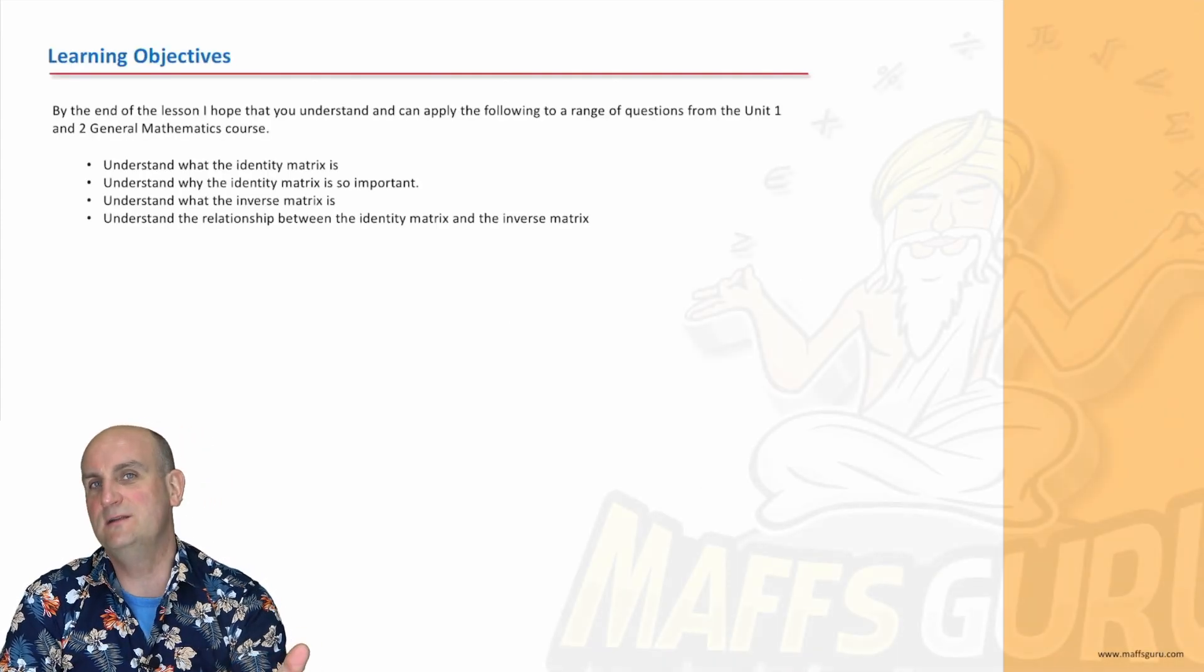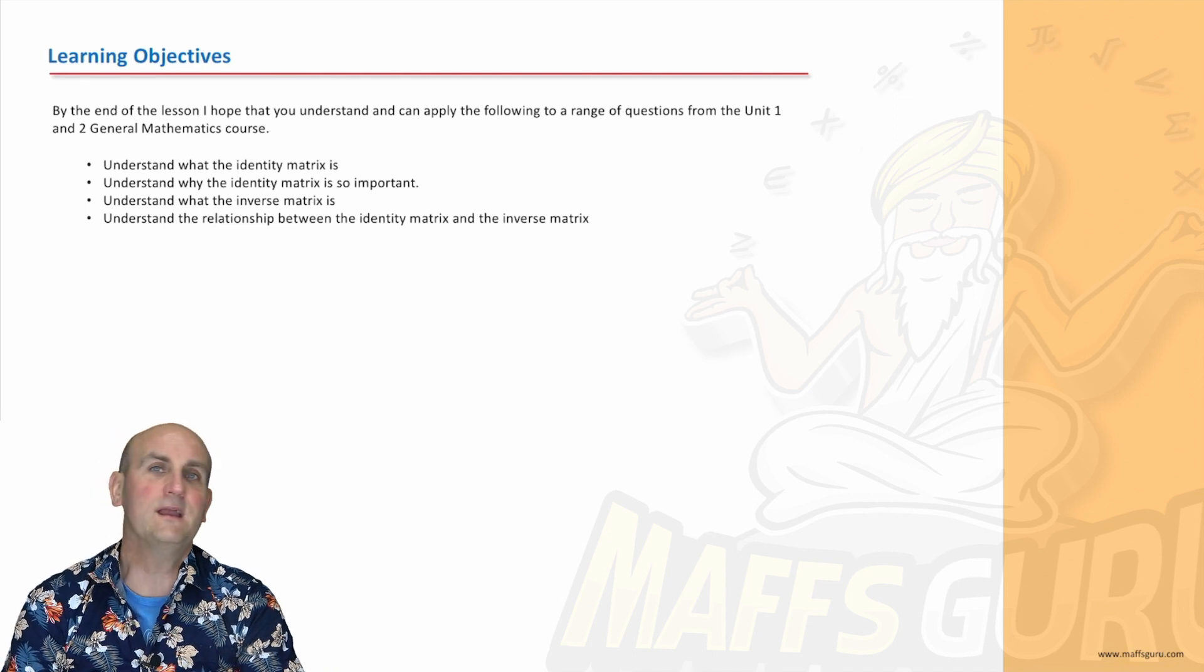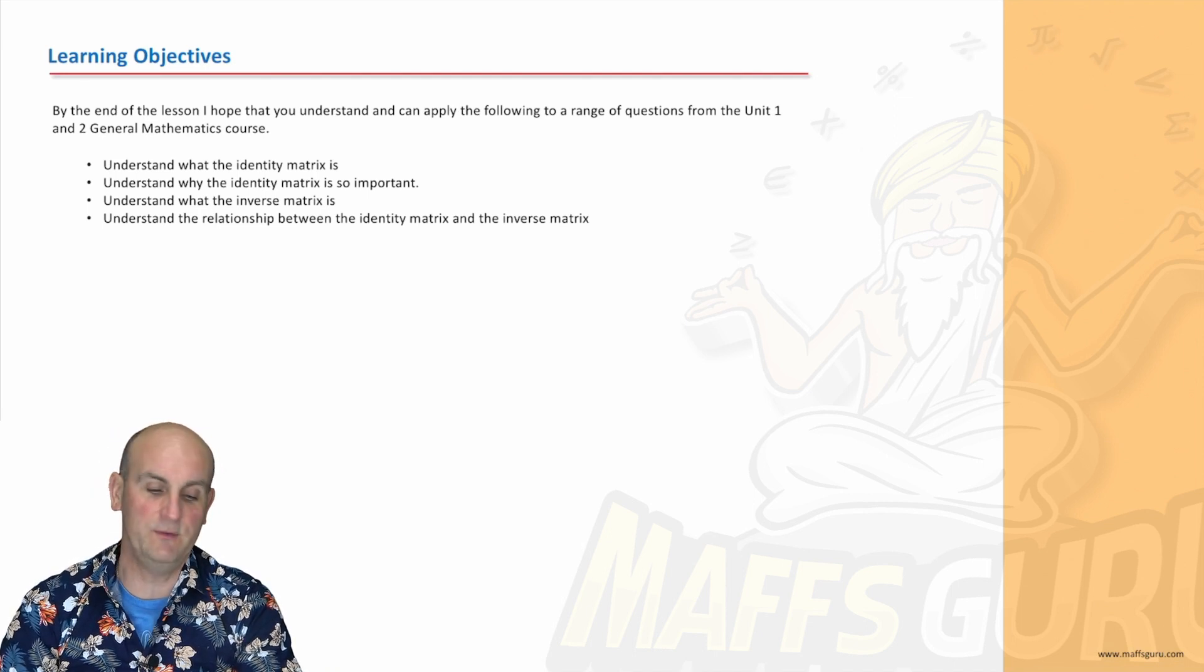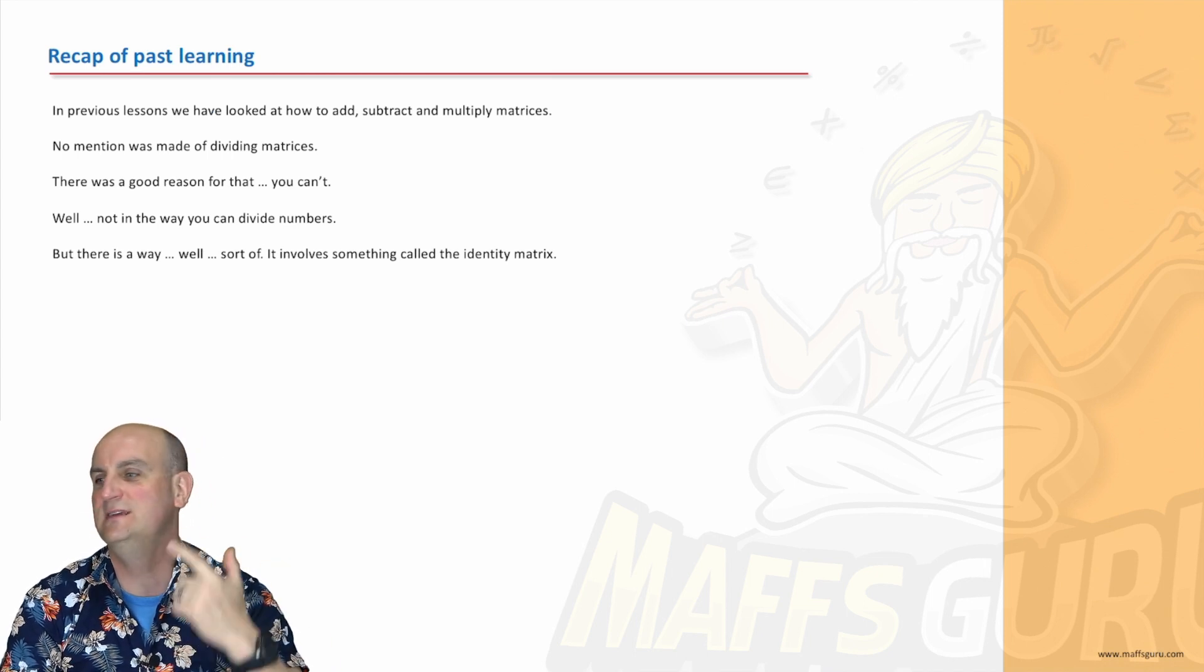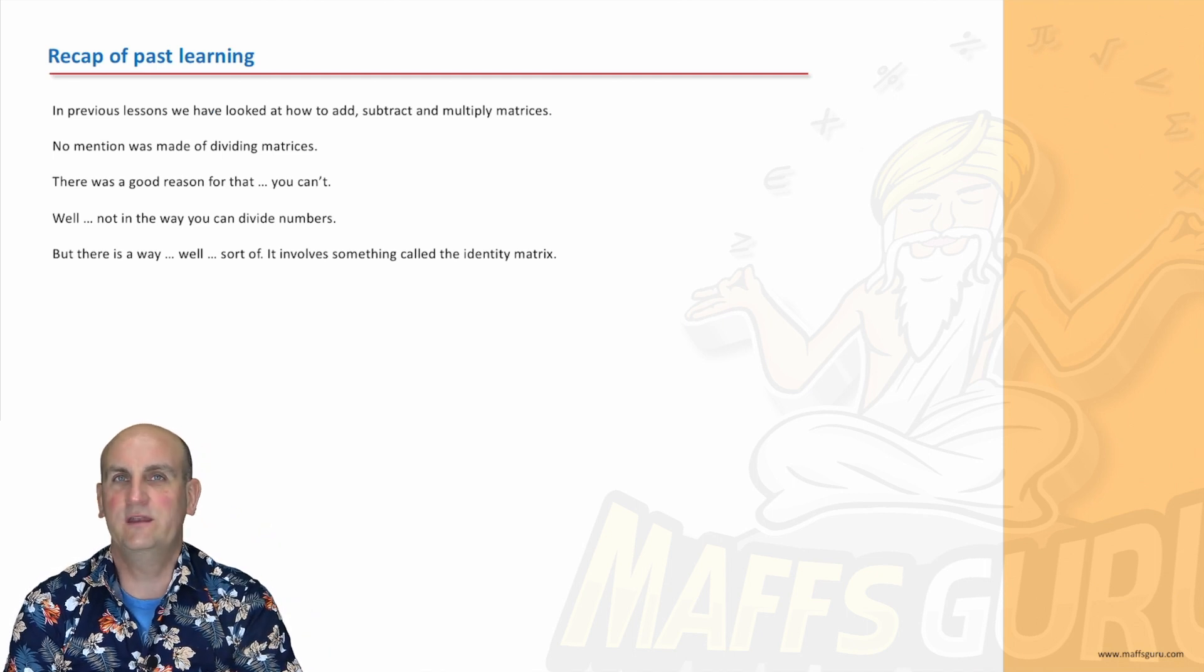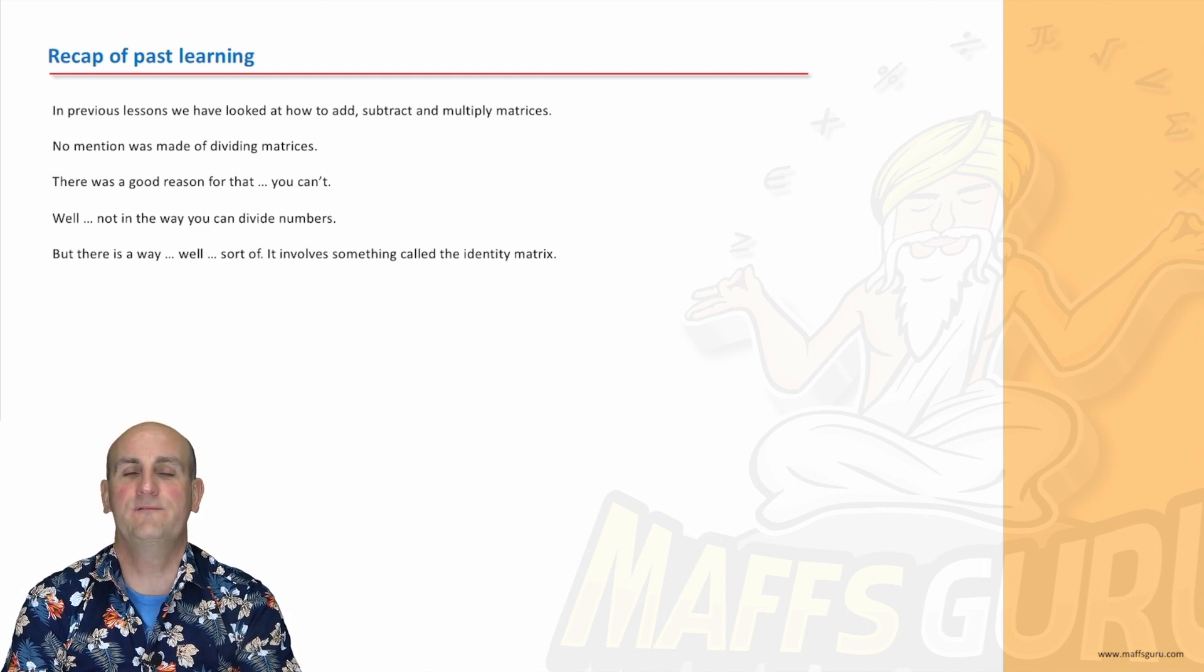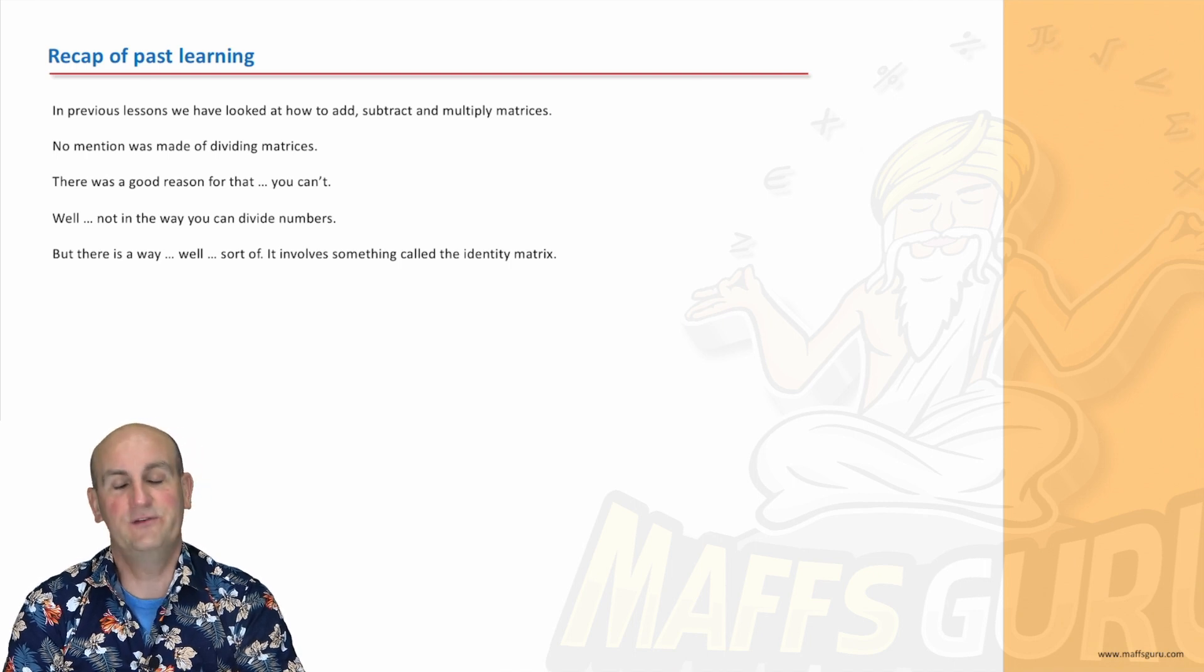We're going to look at something called the Identity Matrix and the Inverse Matrix. We're building on the ideas that we have had before. We've looked at adding matrices and subtracting matrices and timesing matrices. But if you notice, there's one we haven't done. And I haven't mentioned anything about dividing matrices. Well, ladies and gentlemen, the bad news is you can't divide matrices.